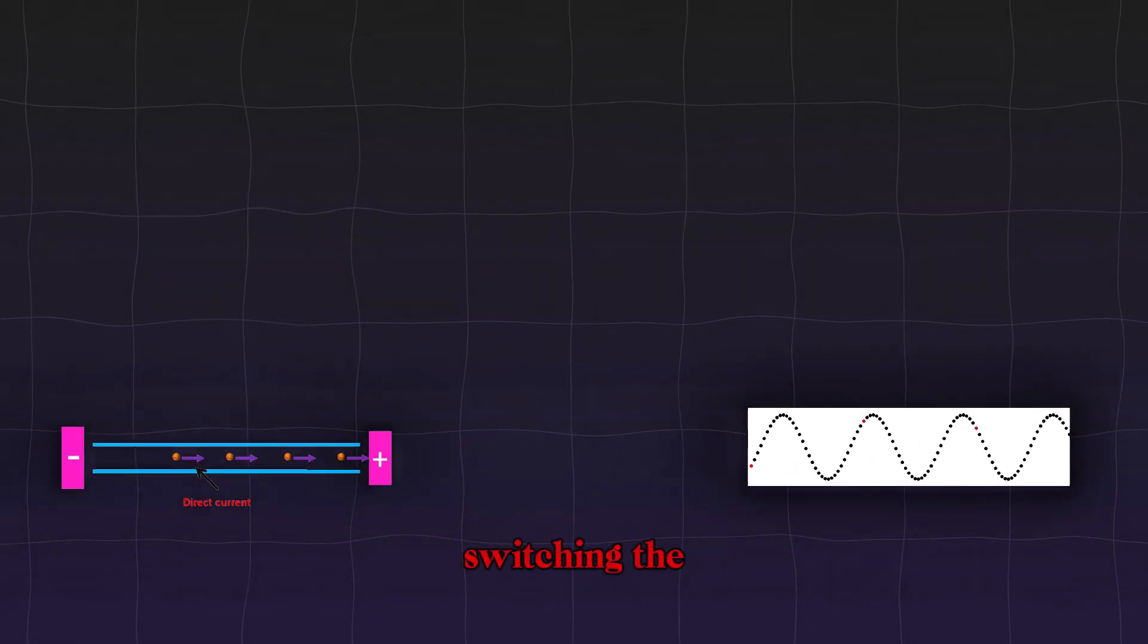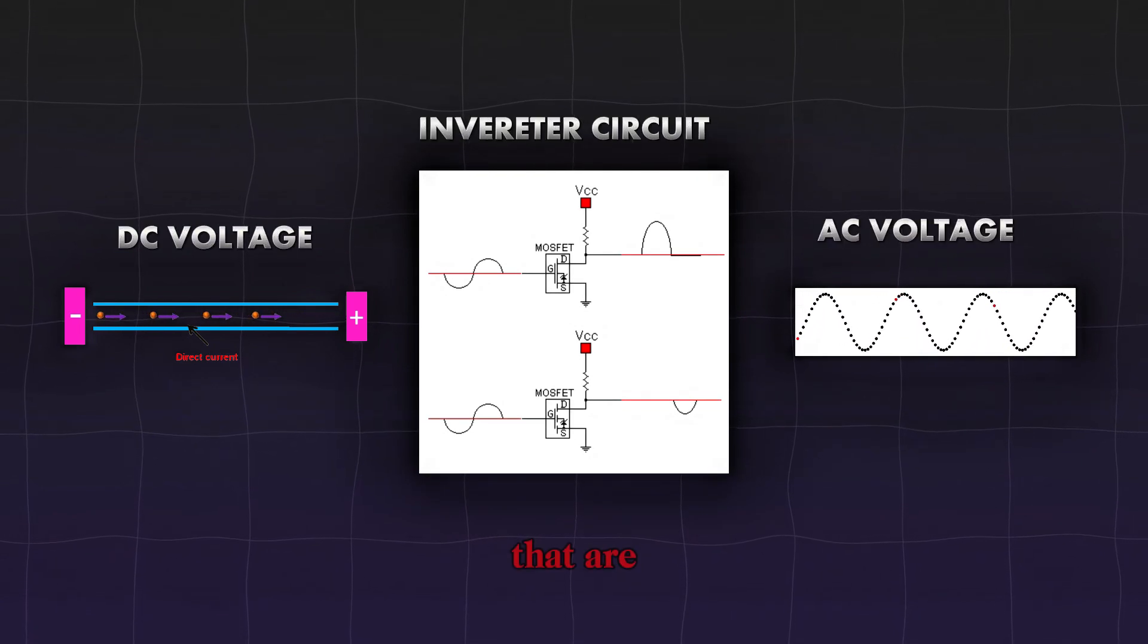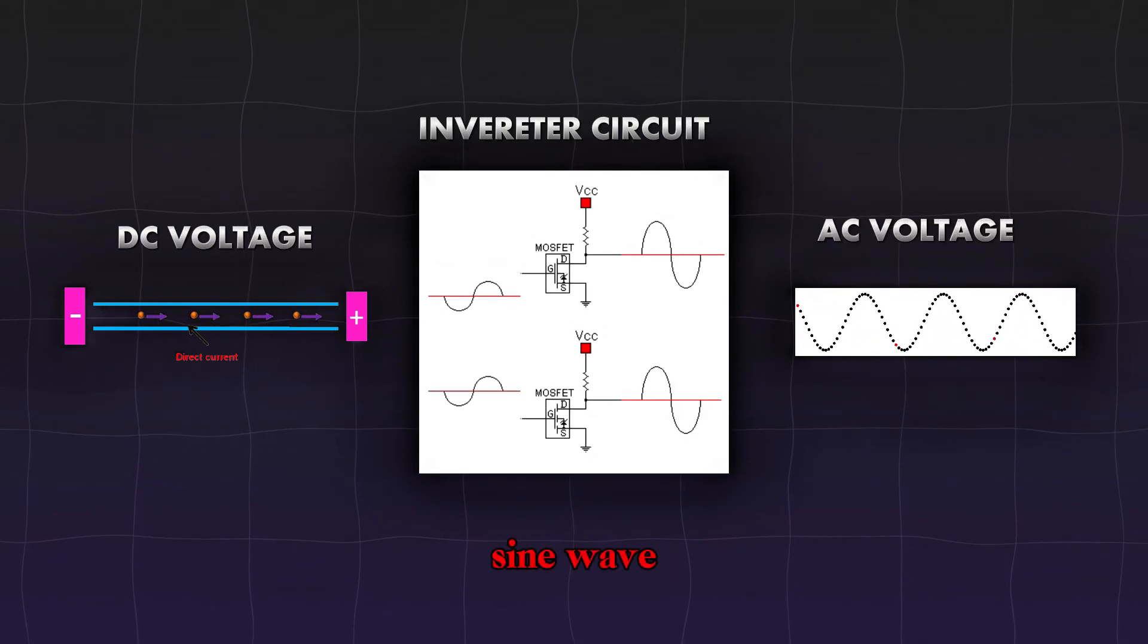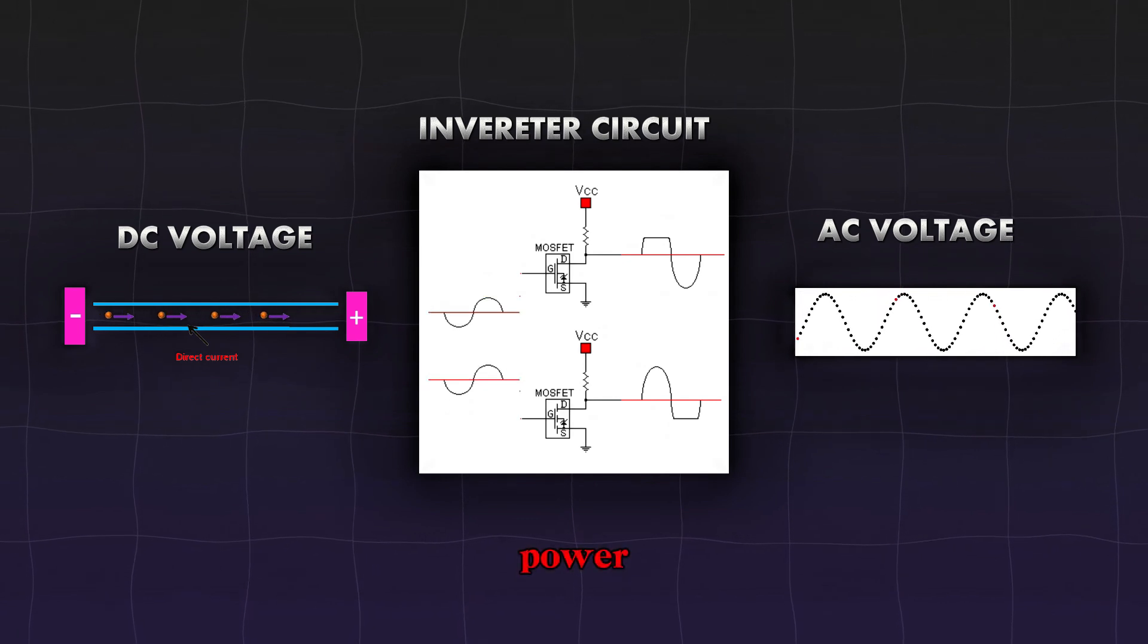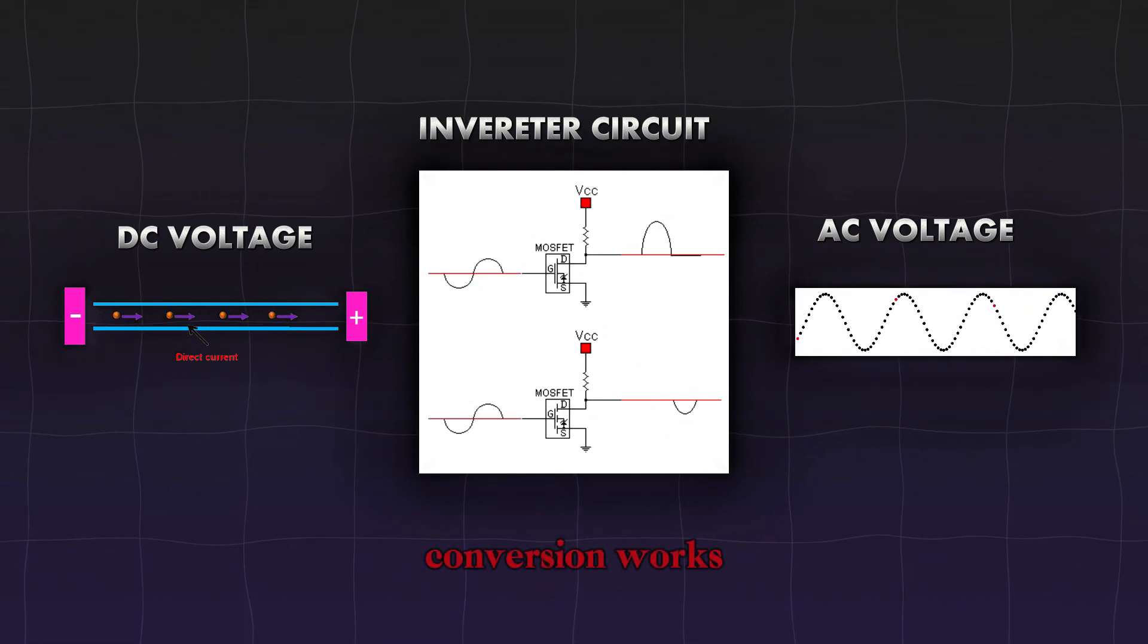Inverter does this by rapidly switching the DC input on and off, creating a series of pulses that are then shaped into a sine wave, mimicking AC power. Let's take a look at how the DC to AC conversion works.